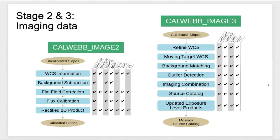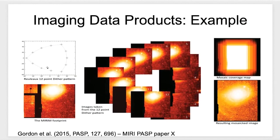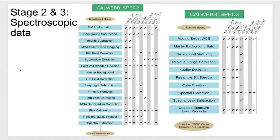Stage three then runs a source catalogue on the combined mosaic. So at the end of stage three for imaging you basically get a combined mosaic from all the exposures in a given observation group, along with a catalogue. Here's a little graphic showing an example of what this looks like — stage one is your single exposure, stage two calibrates all these different exposures, and stage three takes them all and combines them into a single combined mosaic. This particular example uses MIRI data; Carl Gordon put these slides together last year.